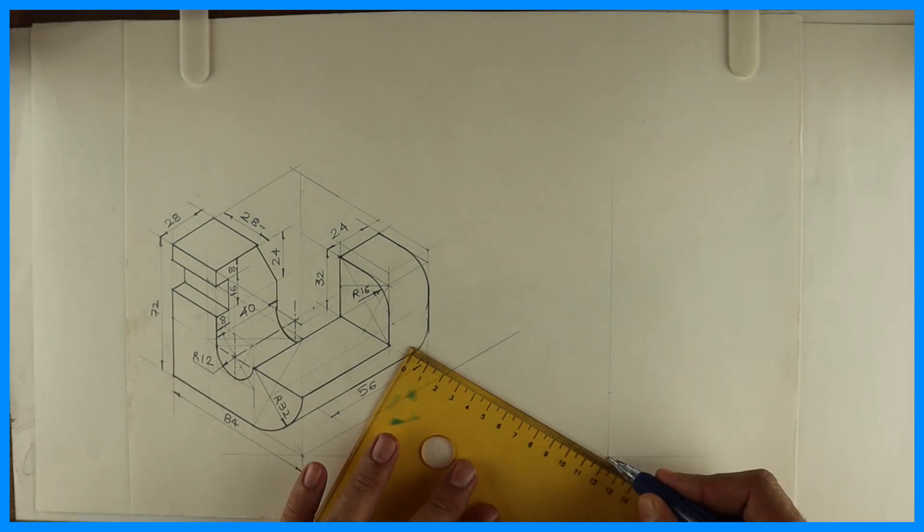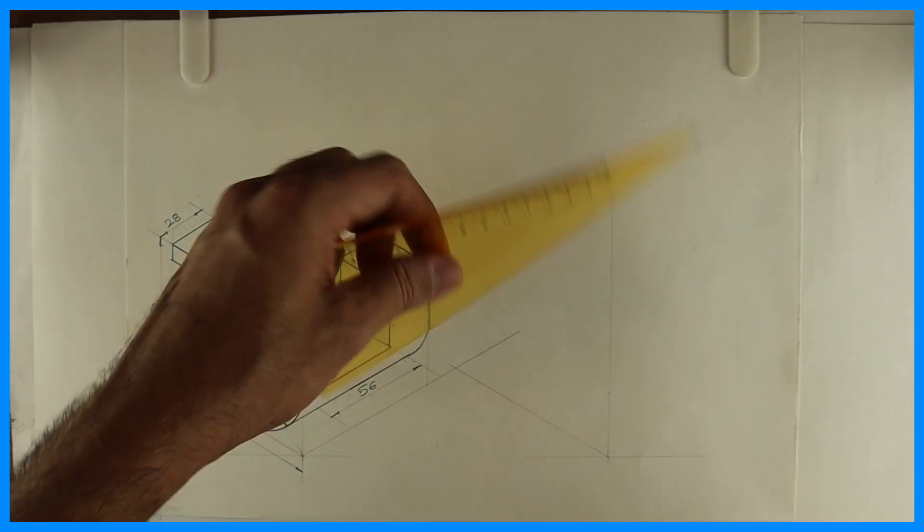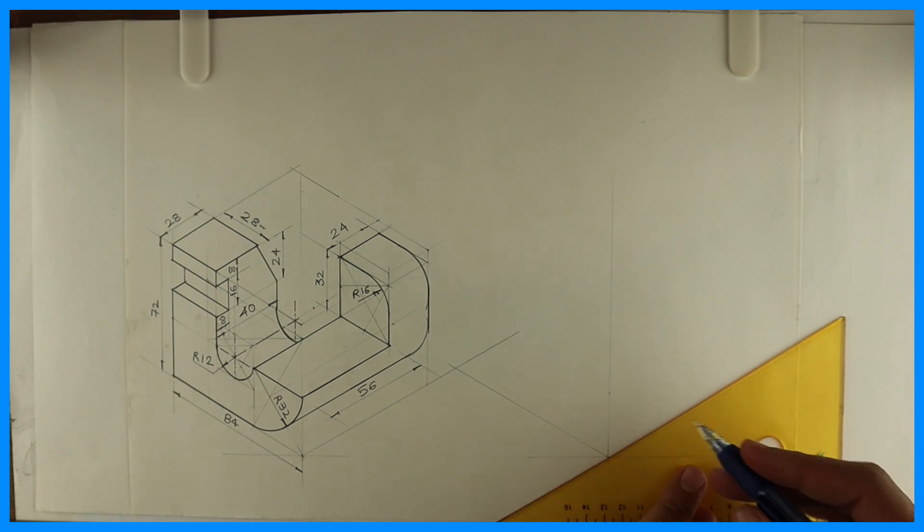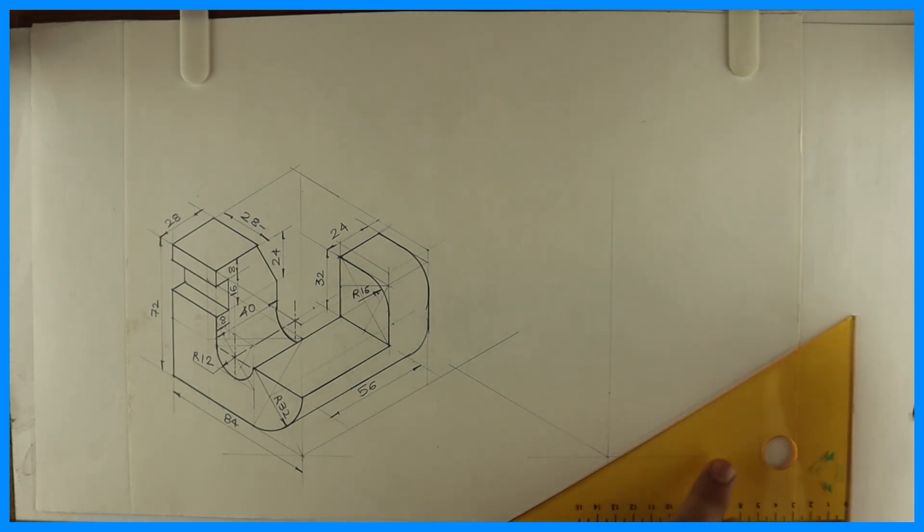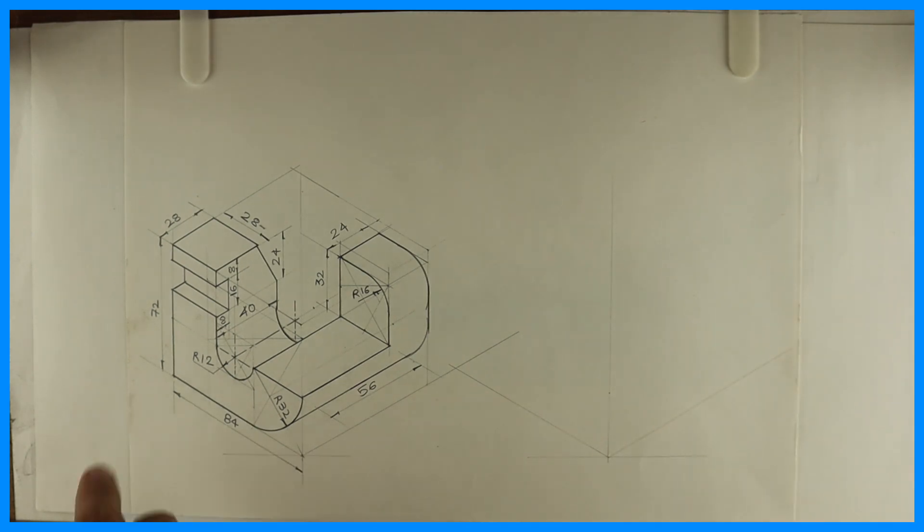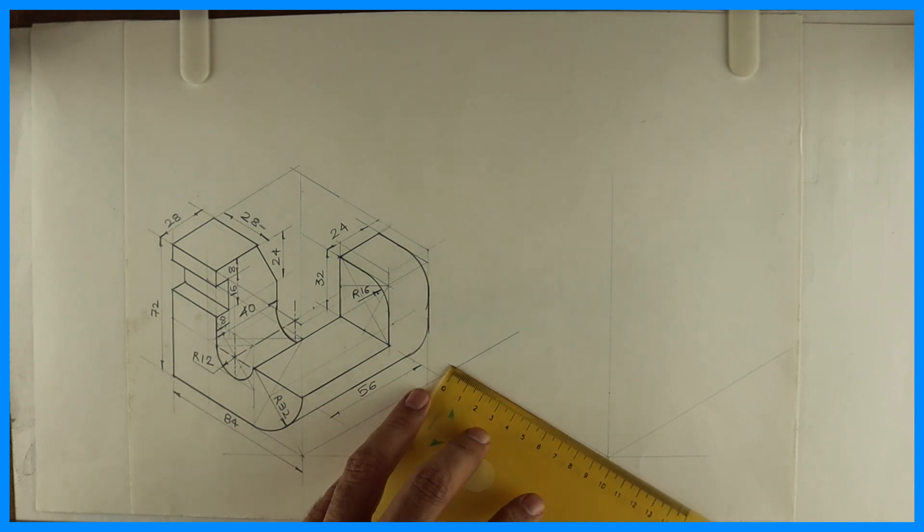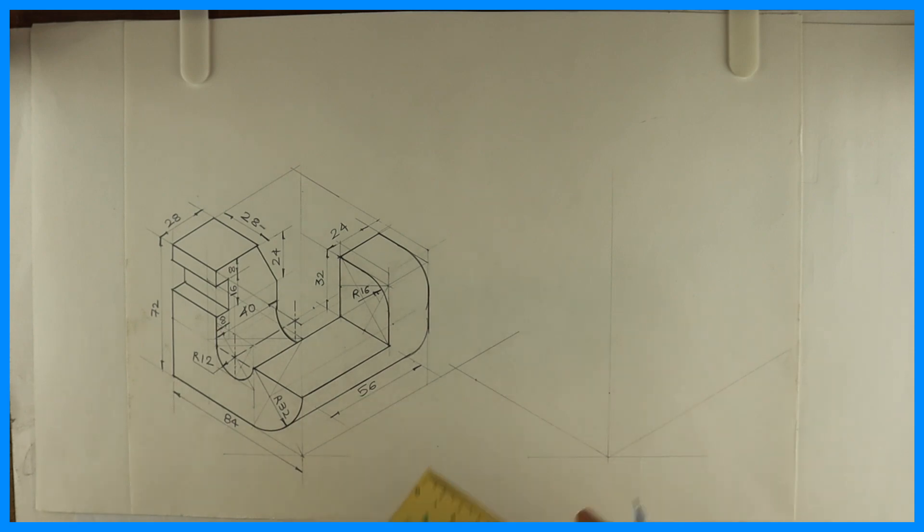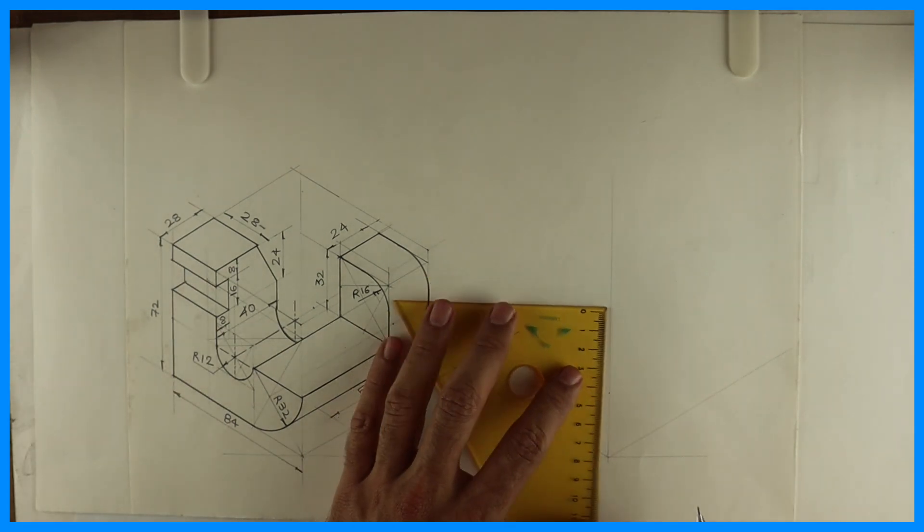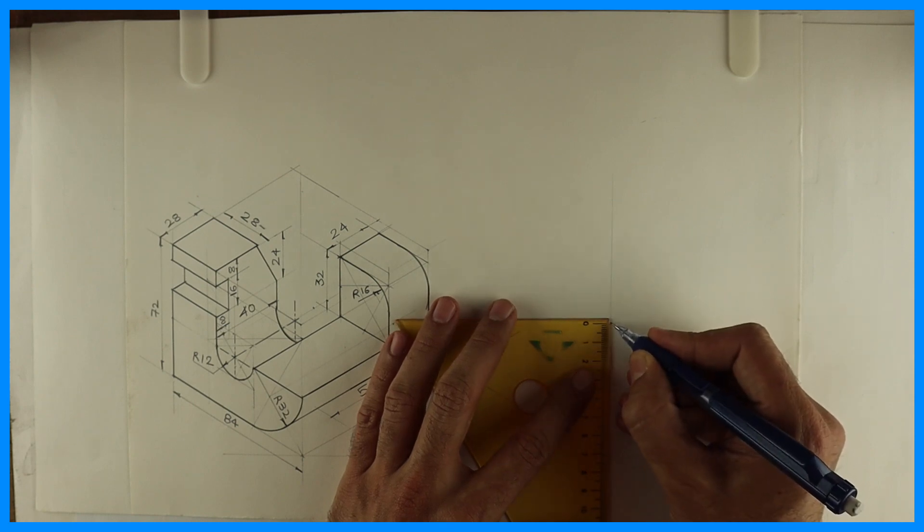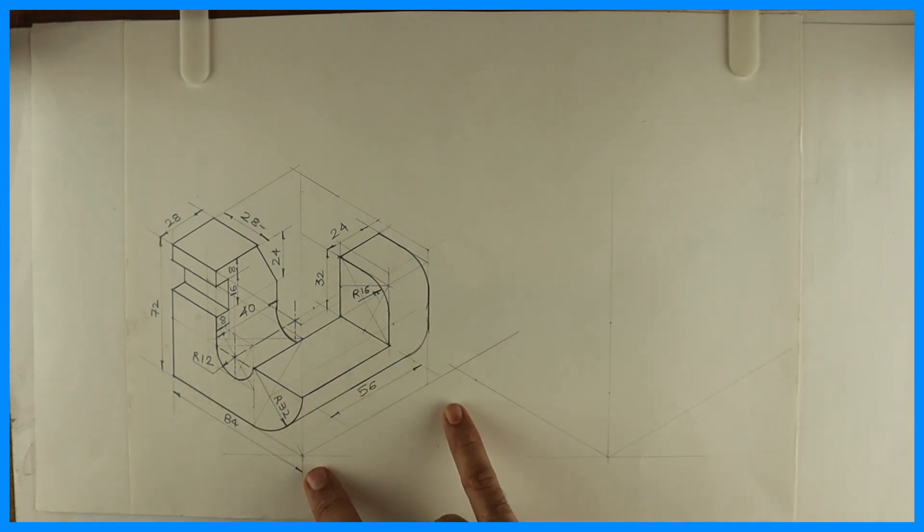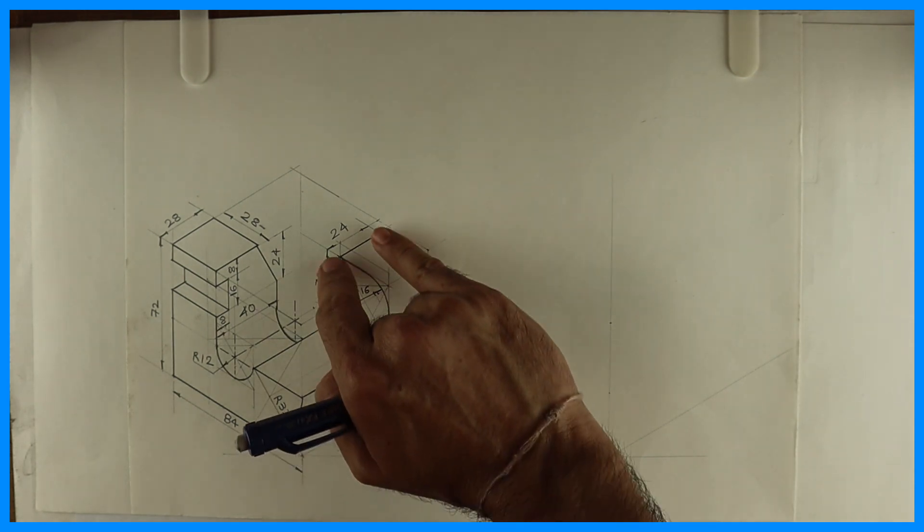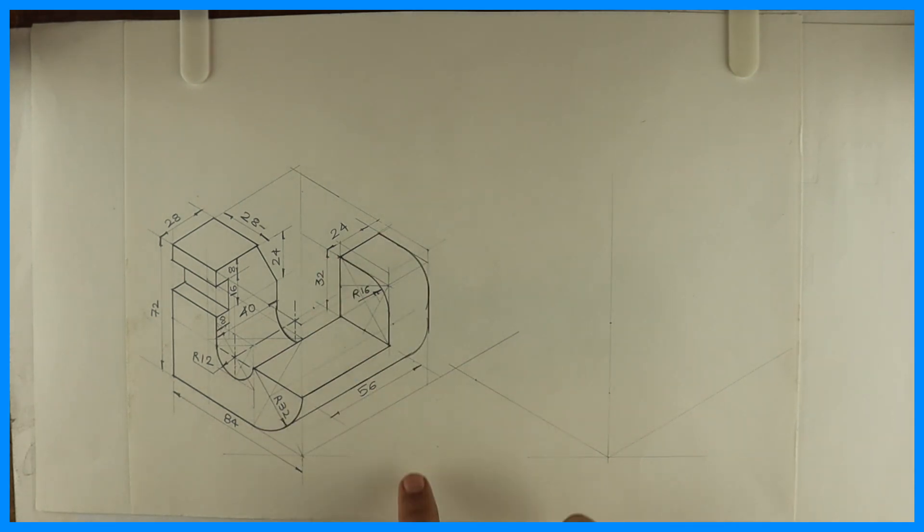First we will draw 30-30 degree. Let's take this as 84. Left side of O is 84. Height is 72, and width is 56. See, this is 56 plus 24, so that is 80.